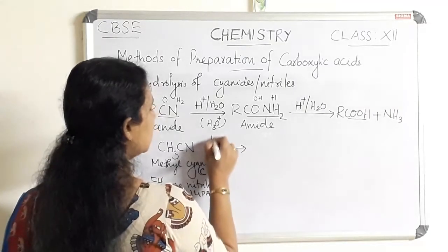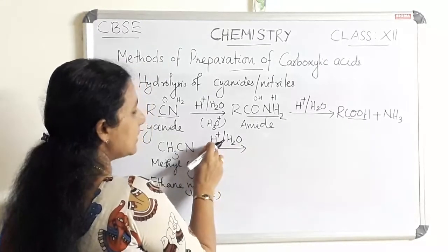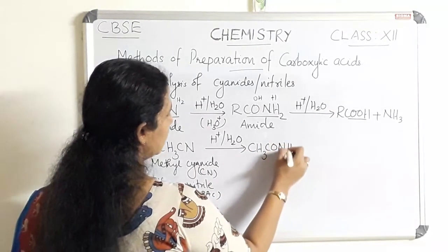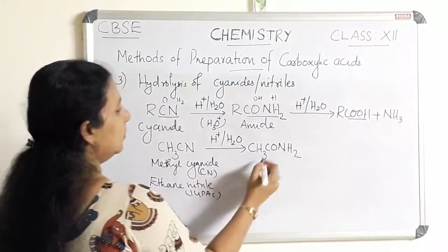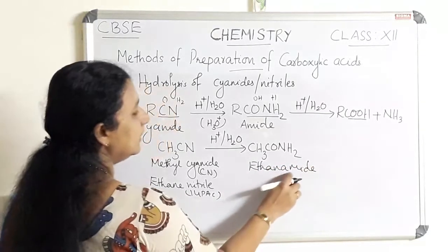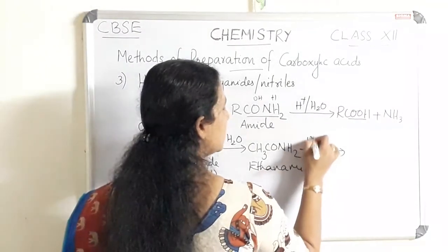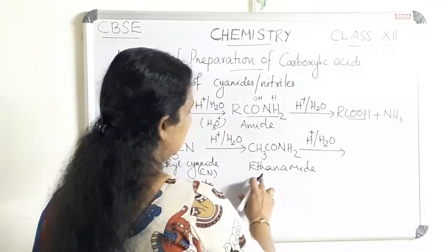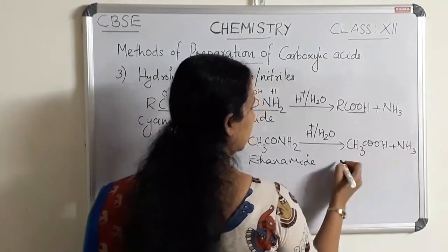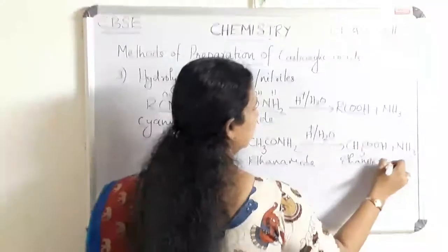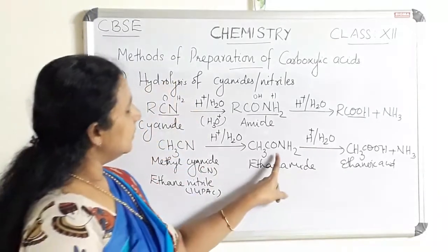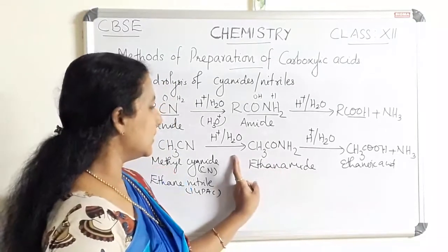CH₃CN on hydrolysis with H⁺/H₂O — acid hydrolysis — gives CH₃CONH₂. This is an amide, called ethanamide. Further hydrolysis gives ethanoic acid, and ammonia is the byproduct. If the reaction condition is strong, ethanoic acid is the end product. If the reaction condition is weak, the reaction ends with ethanamide.